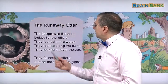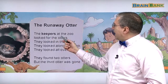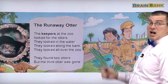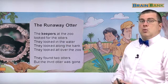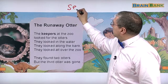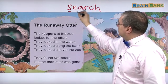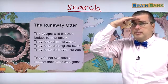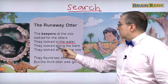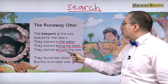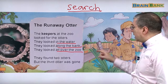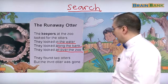The runaway otter. The keepers at the zoo looked for the otters — we can see them here. Where are they? The otters are gone. To look for something means you're searching. Search means you look for something. They looked in the water, they looked along the bank, and they looked all over the zoo — even in the other animals' homes.